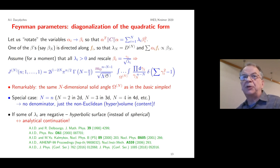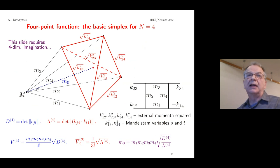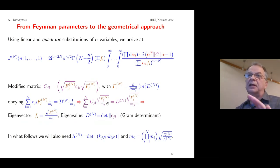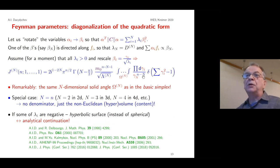Except for the pre-factor, all dependence on momenta and masses is in the limits of integration, which form an N-dimensional solid angle. The amazing thing is that this N-dimensional solid angle is the same solid angle as in the basic simplex. By this transformation we obtain an integral where we integrate over this solid angle, and the delta function places us on the unit hypersphere. We integrate over the piece of the hypersphere cut out by this solid angle.